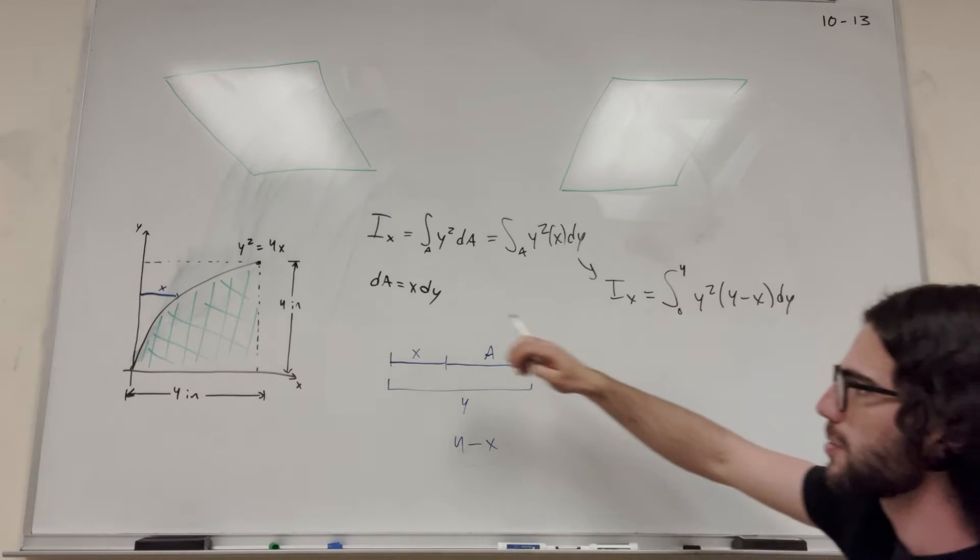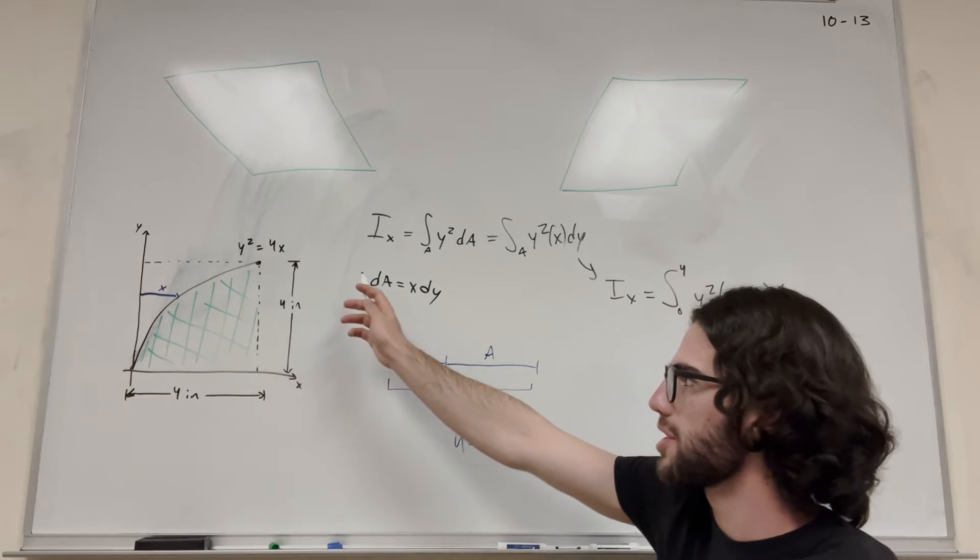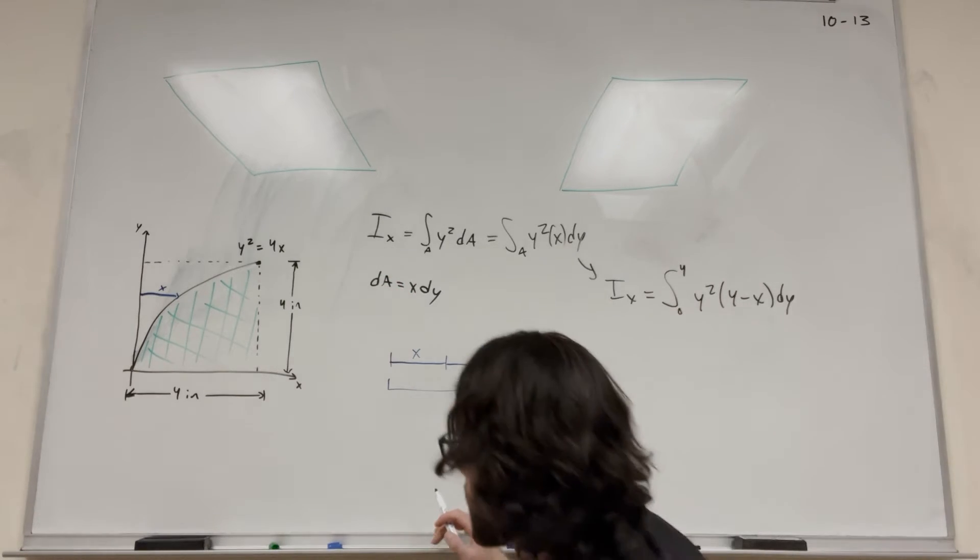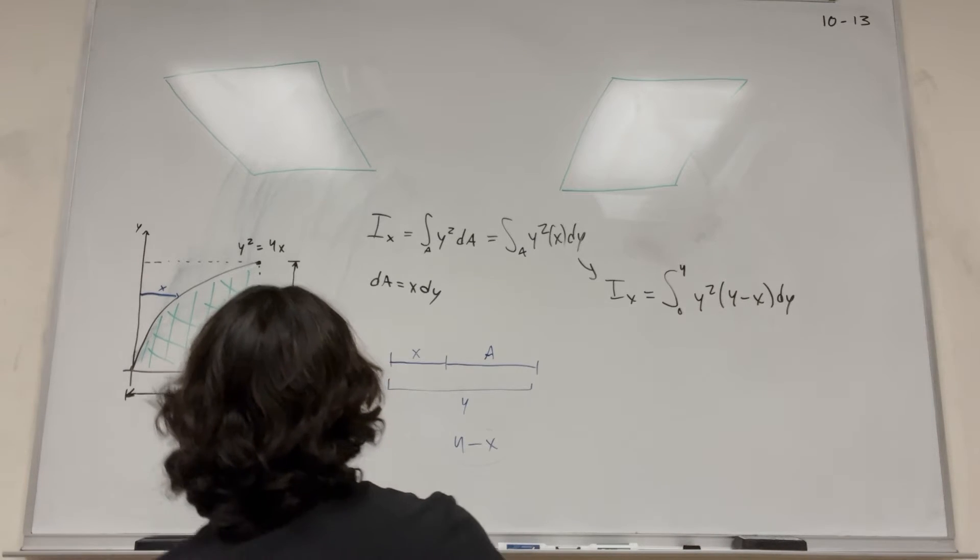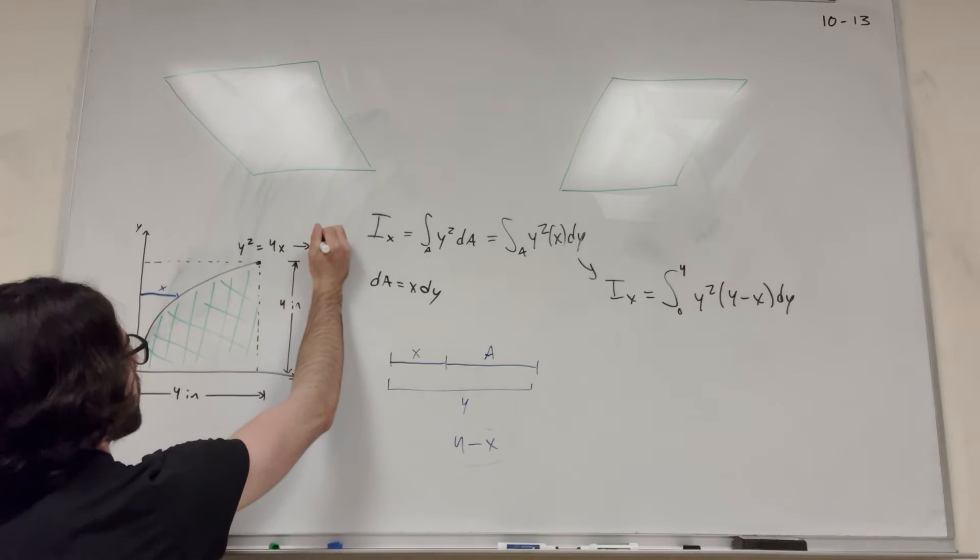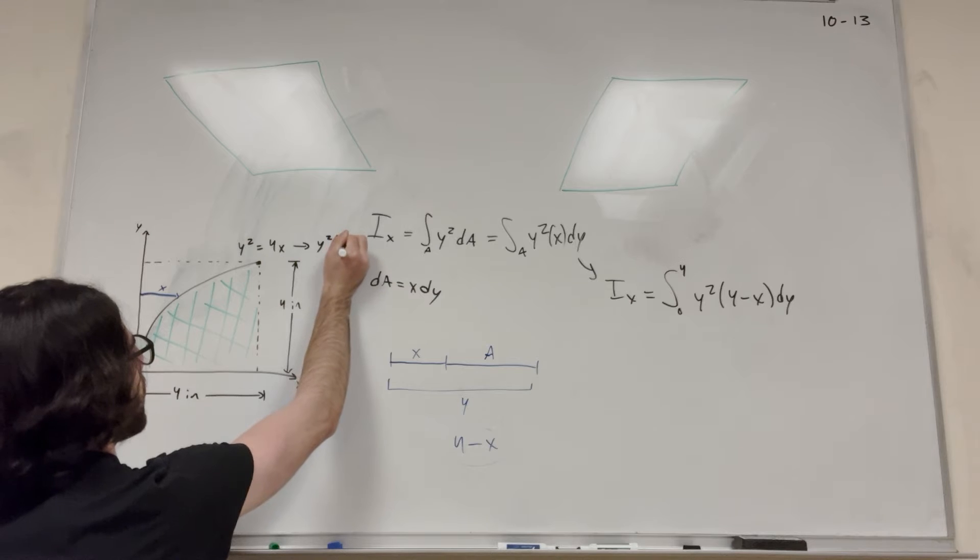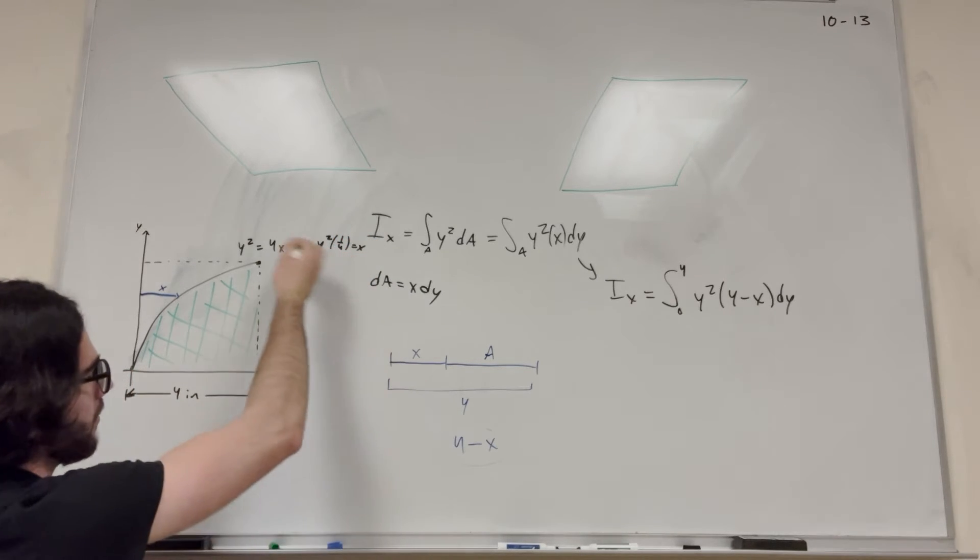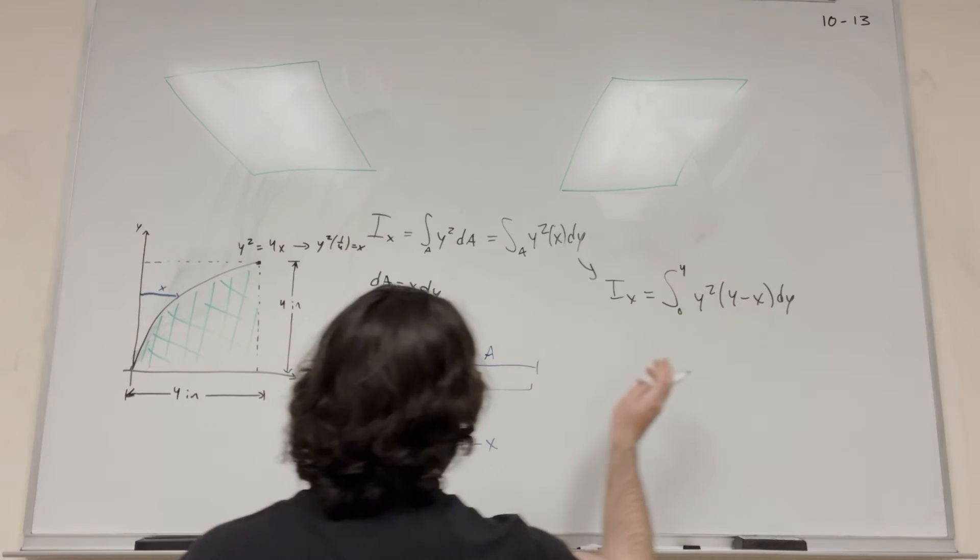To get rid of this x, we're going to use the equation we know, y squared equals 4x, and resolve for x. That's a pretty simple one-step process. This goes to y squared times 1 over 4 equals x, just by dividing by 4.